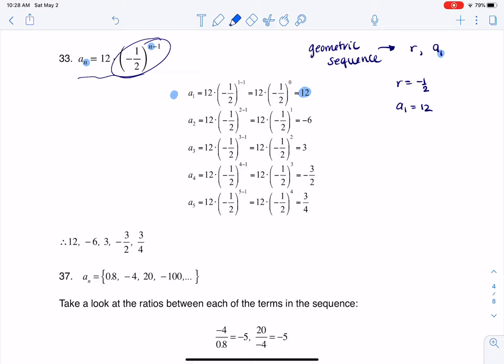So after that, it's a matter of taking your a sub n formula and plugging in your particular value of n. So what I mean by that is if I want a sub 2 over here, I'm going to put a 2 here and I'm going to put a 2 here.